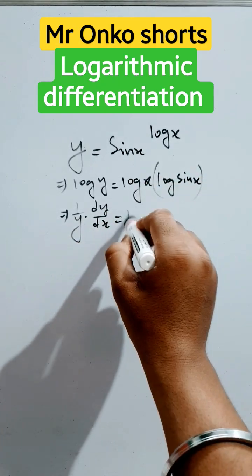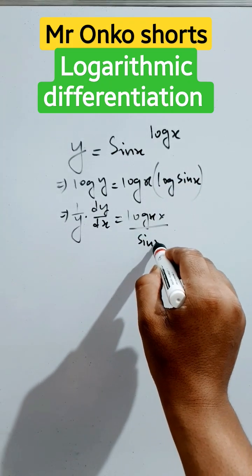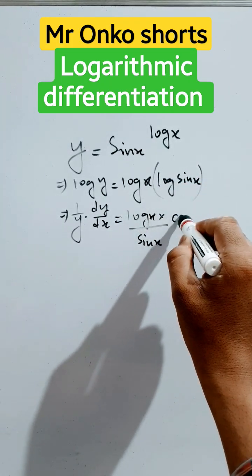u into v property. So u will be fixed and the derivative of this will be 1 by sine x into the derivative of sine x will be cos x.